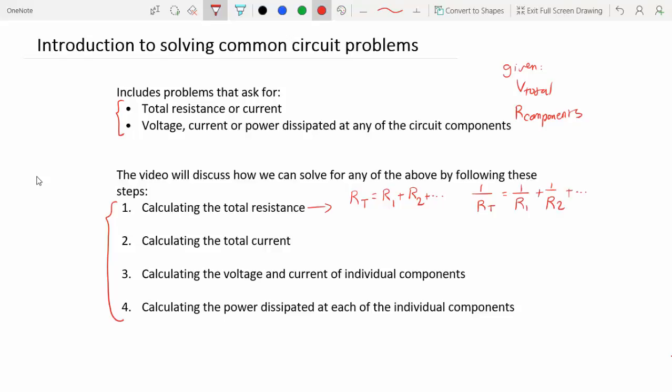Then you will have to solve for the total current using I equals V over R. Since you will be given V in the question, and then you'll have R from step one, once you have the total resistance and total current, you can find the current and the voltage across each of the components in the circuit.